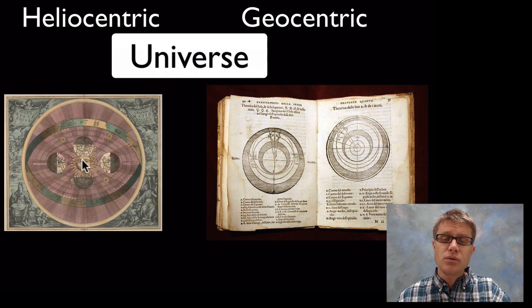And then the new theory was this heliocentric theory, the idea that the sun sits at the center of our solar system and then the planets move around that. It wasn't as simple as one of these is right or wrong.